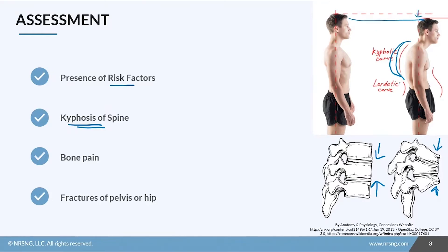A kyphotic curve is this curvature of the thoracic spine where it curves and they lean forward. They actually lose some height because of this bending, so you'll hear older patients say things like 'I used to be 5'6 but now I'm 5'3.' We can also see bone pain or achiness, as well as fractures of the pelvis or the hip.